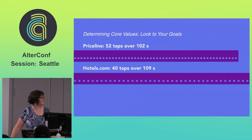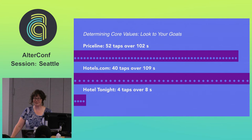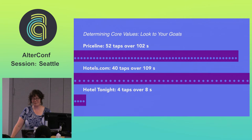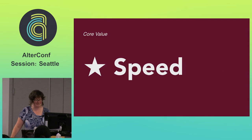For a commercial site like HotelTonight, we can see at least one of their values in their design: speed. You can see from the number of clicks from home to booked that they care deeply about how quickly you can book a room. That matches their business goal of just getting a person to a hotel room right now, versus building a relationship or thinking ahead.